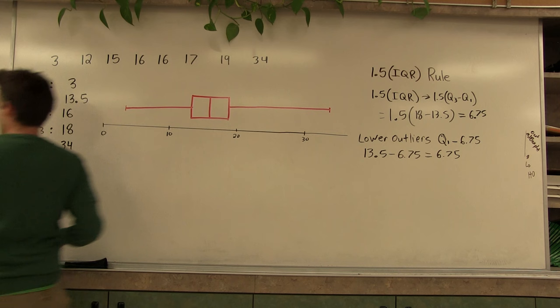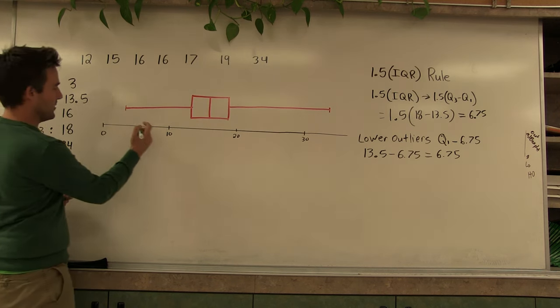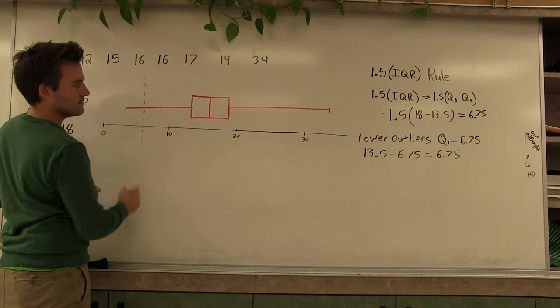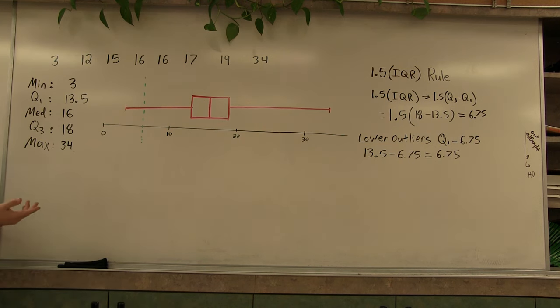I'm actually going to put that 6.75 on our plot. That's about right here. Now what we see is we do have values that are lower. So it turns out that this 3 is a lower outlier. Here's how you modify the box plot.